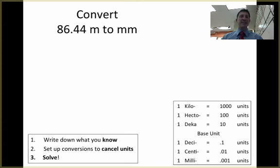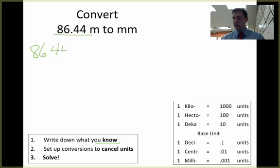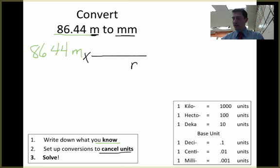Let's go ahead and try another one: 86.44 meters into millimeters. First thing, I need to figure out what I know — what's already given to me. I can see that right up here: 86.44. So that's the first thing I do — I write down what I know, which is 86.44 meters. The next thing I need to do is set up the conversion to cancel units. I don't want my answer in meters, I want it in millimeters, so I need to have meters down here on the bottom of the conversion factor. Remember, this is technically over 1.